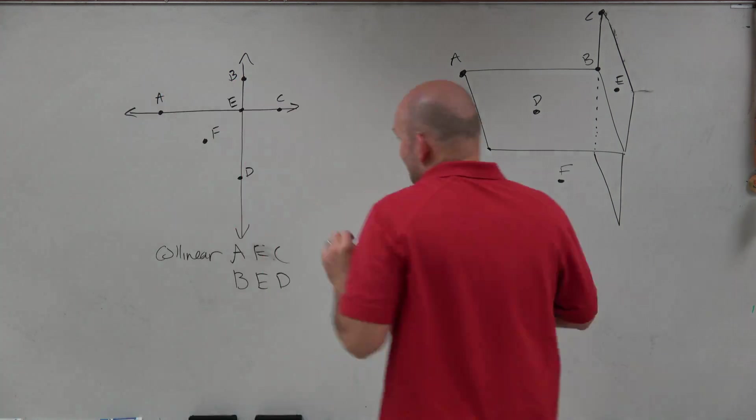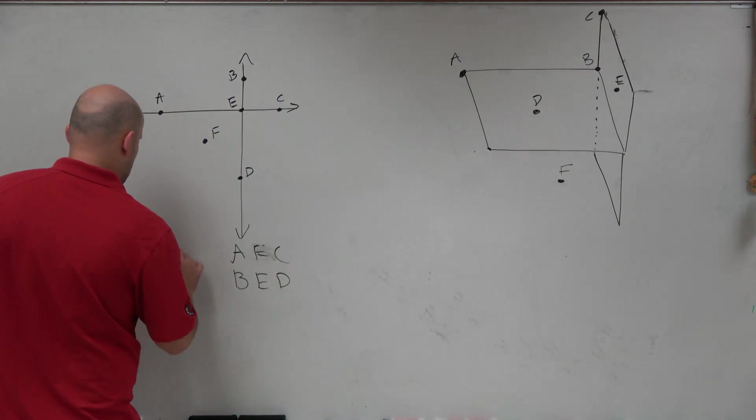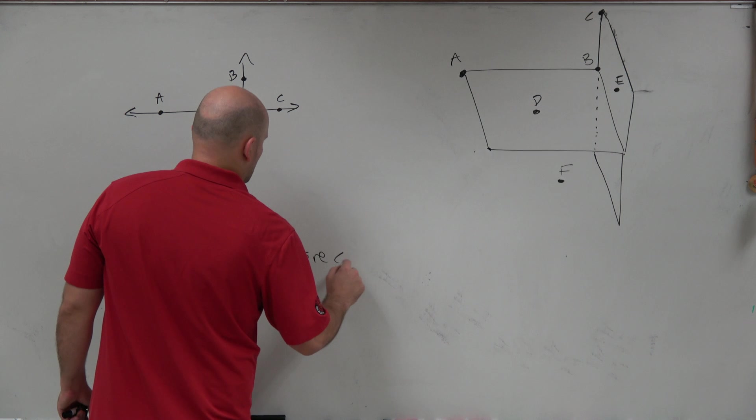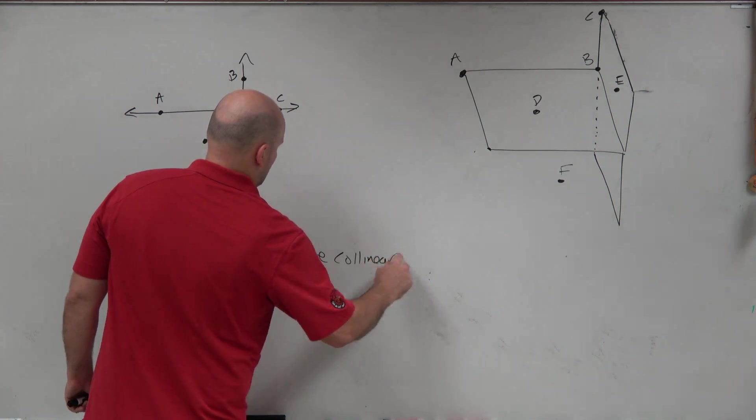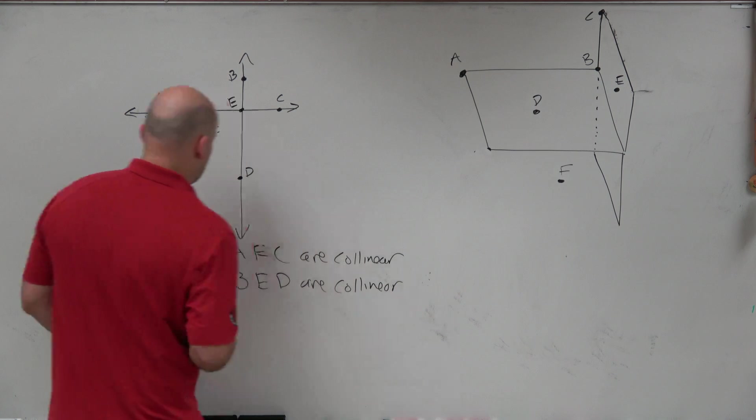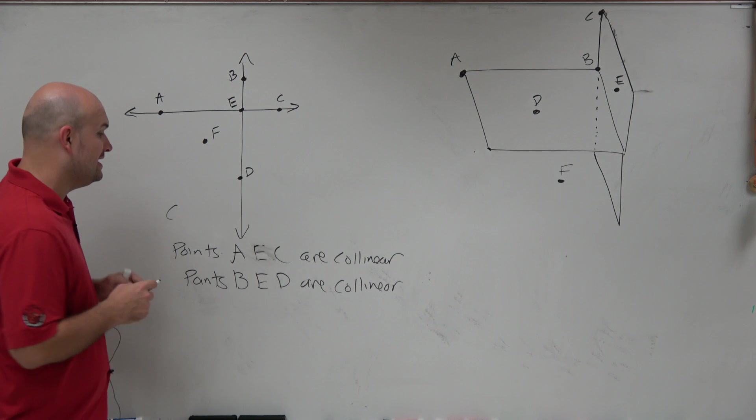So therefore, we could say that the points... let's write this... So we could say the points A, E, A, E, and C are collinear,